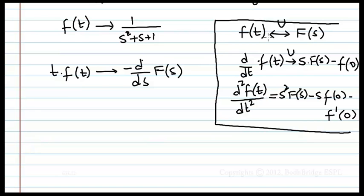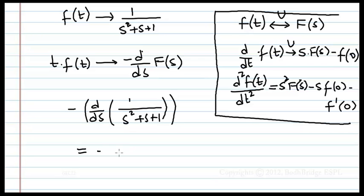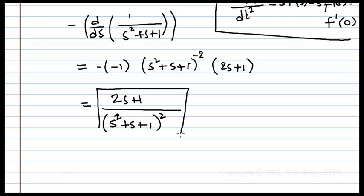Use the property of the normal Laplace transform: t·f(t) has Laplace transform −d/ds of F(s). So differentiate: −d/ds of 1/(s² + s + 1) equals −(−1)·(s² + s + 1)^(−2)·(2s + 1), which gives (2s + 1)/(s² + s + 1)². This is the Laplace transform of t·f(t), and the unilateral Laplace transform is also the same.